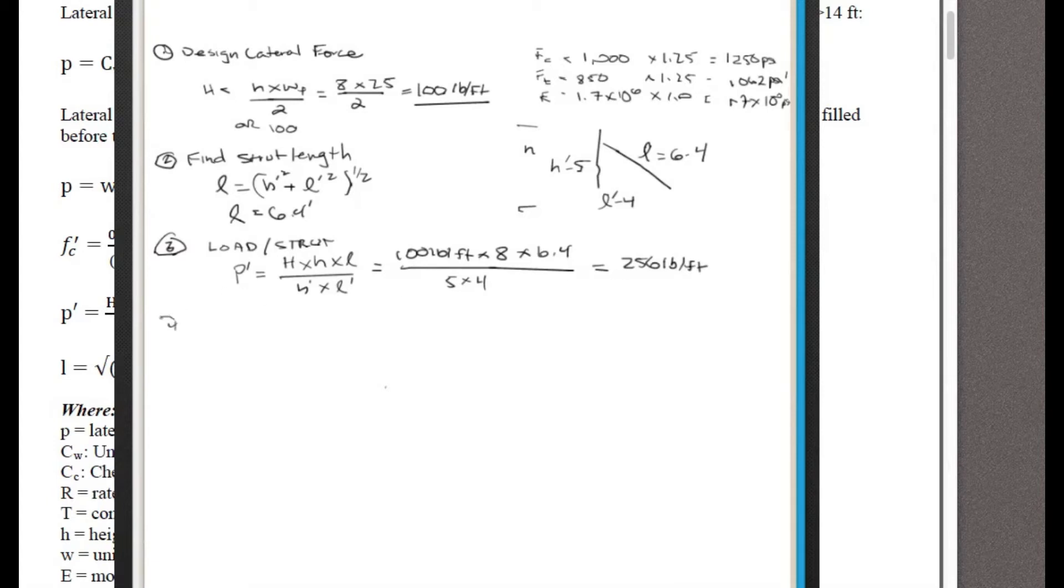And we get P prime equals 256 pounds per foot. Alright, now we have that. Go to step four. We're going to check for buckling. And that has two parts to it. The first part is just checking the slenderness, L over D ratio. And here L, of course, is 6.4. That's feet. And D is 1.5. And that's in inches. That's a 2 by 4 is nominal, or actual thickness there.